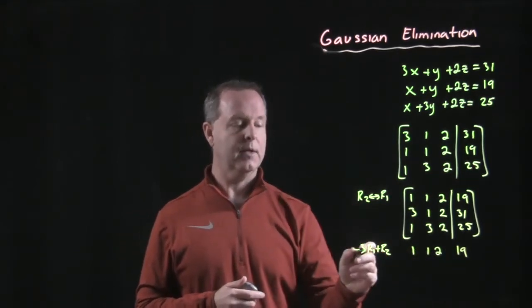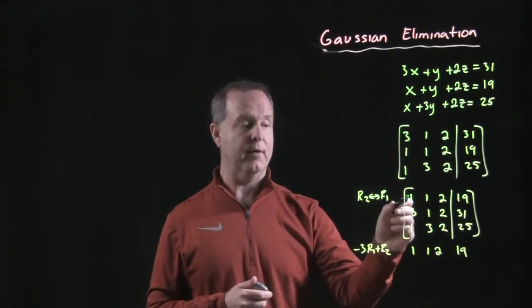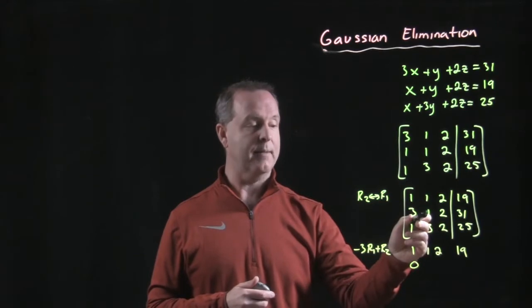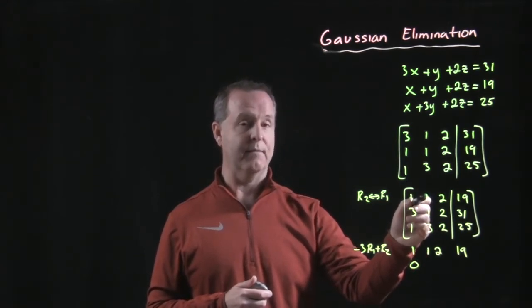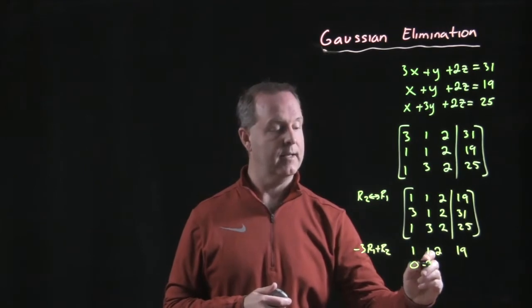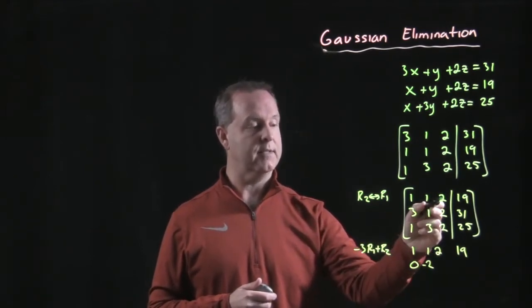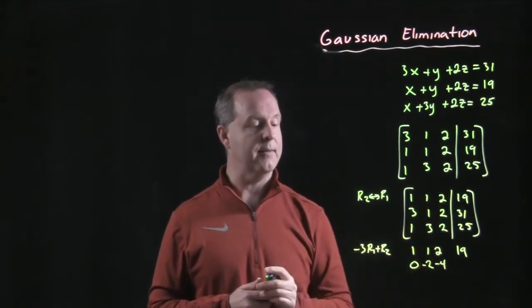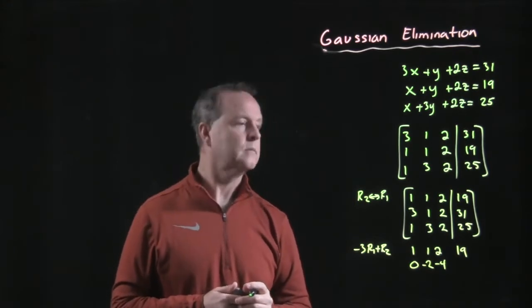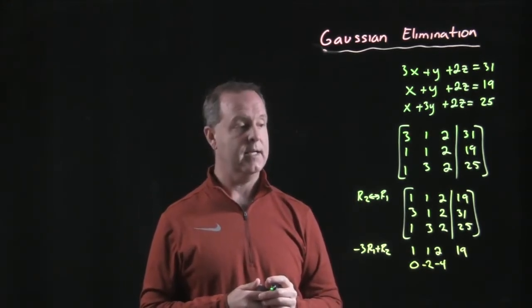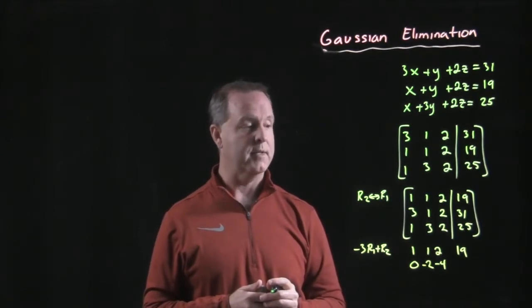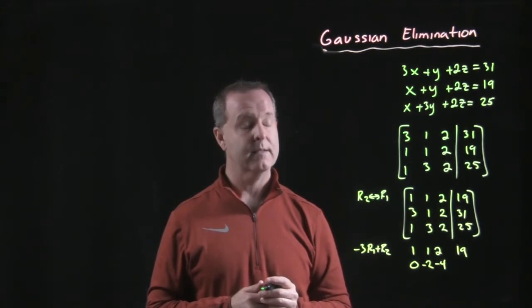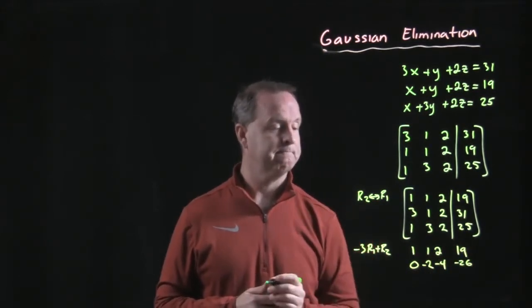All right, there's row one. So multiply row one by negative three. Negative three times one makes negative three plus three makes zero. Negative three times one makes negative three. Negative three times two is negative six. Negative six plus two gives me negative four. Negative three times 19, 60 minus three, 57. So negative 57 plus 31, 26, negative 26. All right, have a zero now in that spot.